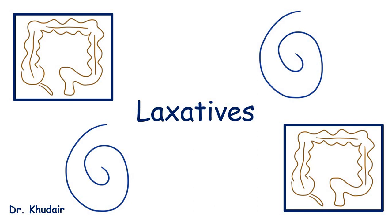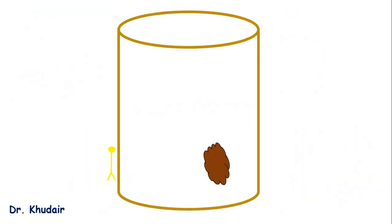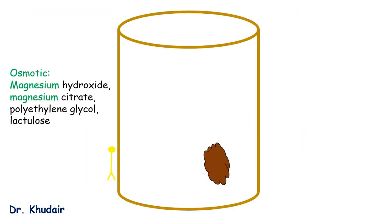There are four classes of laxatives. First, we have the osmotic, like those containing magnesium, polyethylene glycol, and lactulose. These are osmotically active, and they work by drawing water into the lumen of the GI tract.